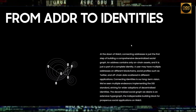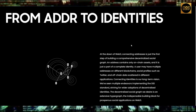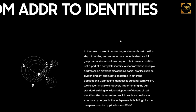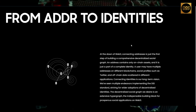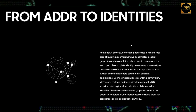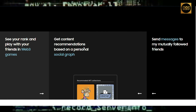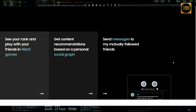At the dawn of Web3, connecting addresses is just the first step of building a comprehensive decentralized social graph. An address contains only on-chain assets and is just part of a complete identity. A user may have multiple addresses on different blockchains, social profiles such as Twitter, and off-chain data scattered across different applications. CyberConnect aims for an extensive hypergraph — the indispensable building block for flourishing social applications on Web3.